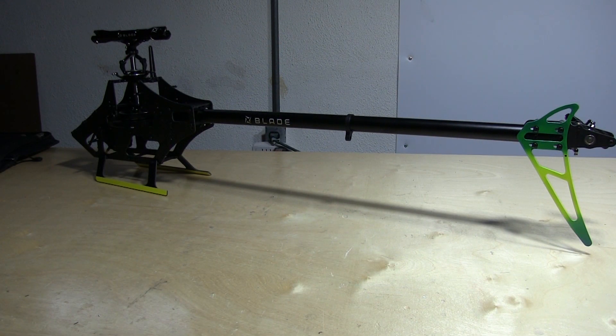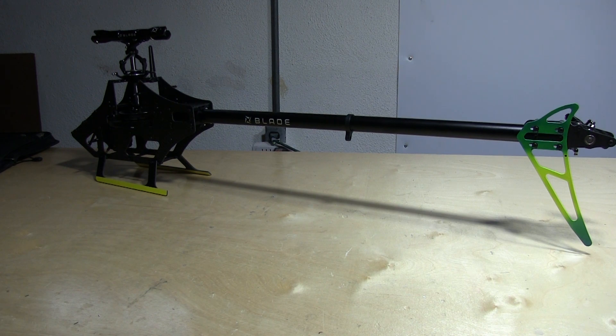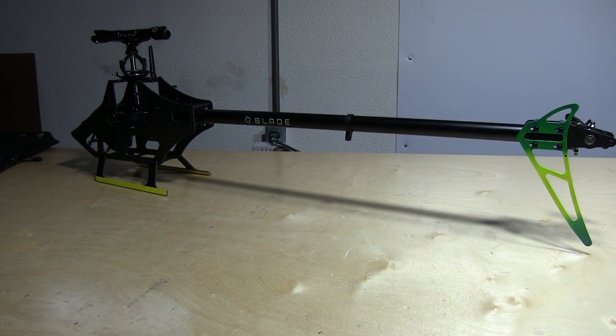Now that the tail belt tension is set, congratulations, you've completed the build for the Fusion 480. Be sure to check out the next video where we'll be installing the servos, the ESC, and the flybarless unit and wiring up everything. Thank you for watching, and don't forget to leave a like and subscribe.